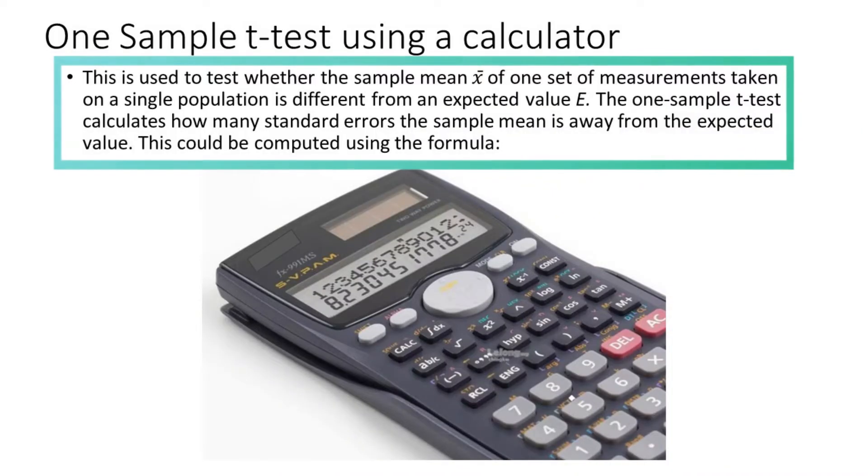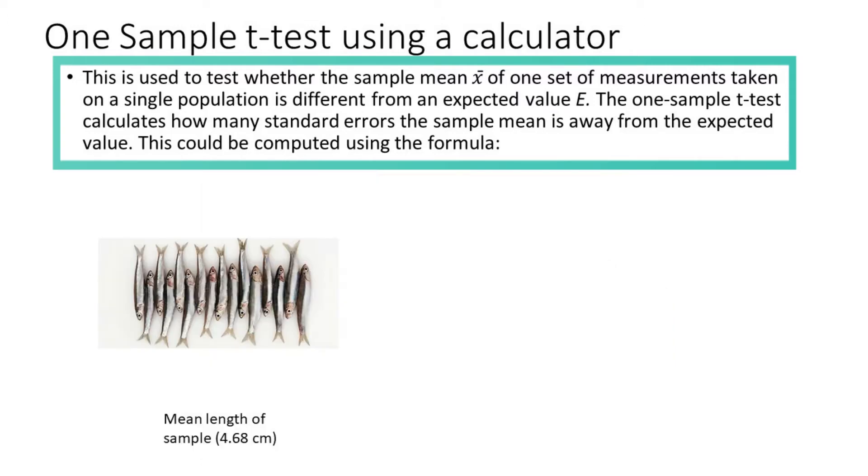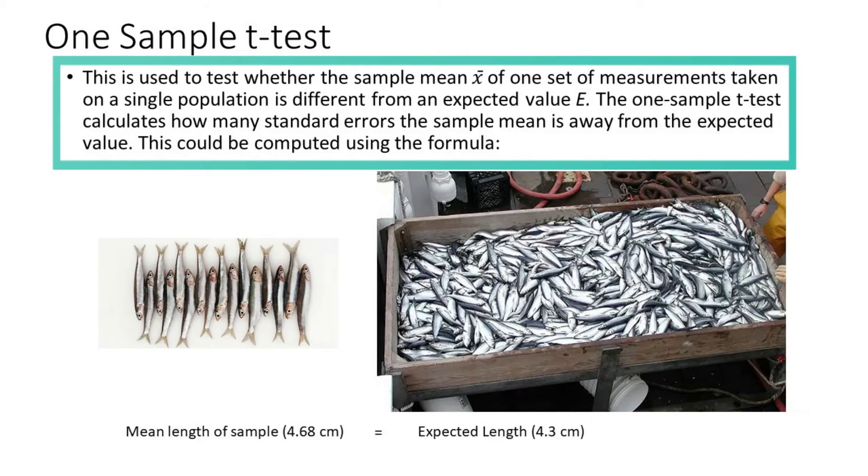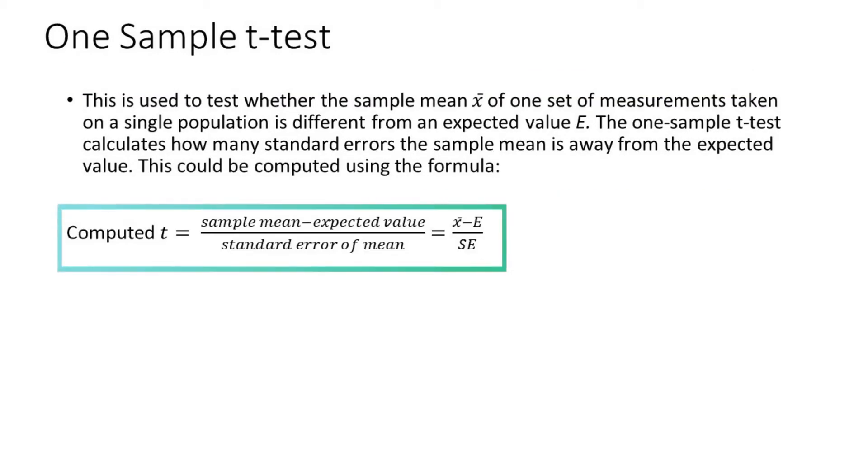One sample t-test is used to test whether the sample mean of one set of measurements taken on a single population is different from the expected value. The one sample t-test calculates how many standard errors the sample mean is away from the expected value. This could be computed using the formula